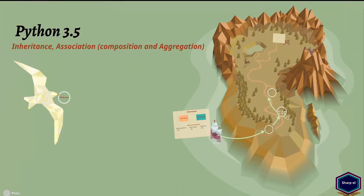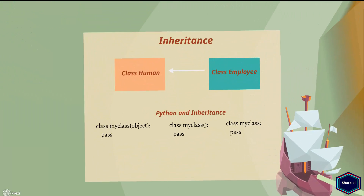Welcome to my tutorial series on object-oriented programming in Python. Today I will discuss some basic concepts of object-oriented programming in Python, which are inheritance, composition, and aggregation. Let's start with inheritance.